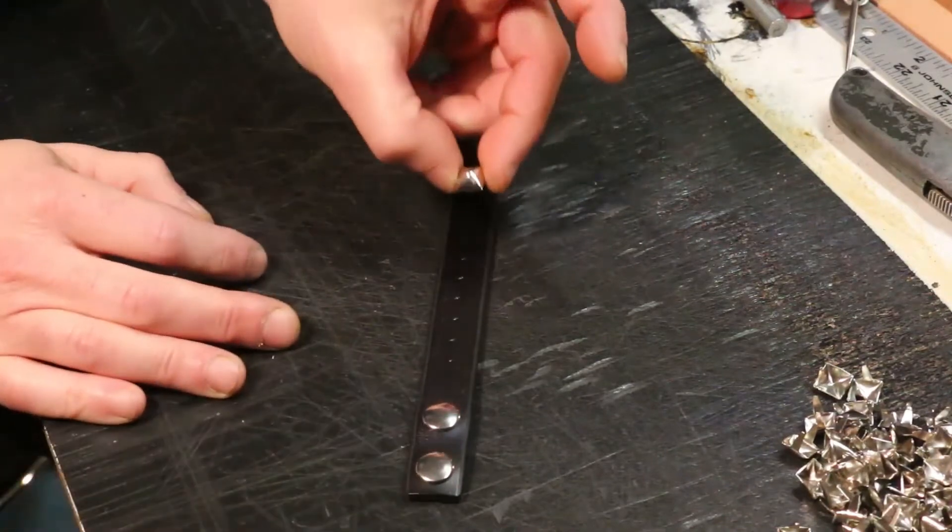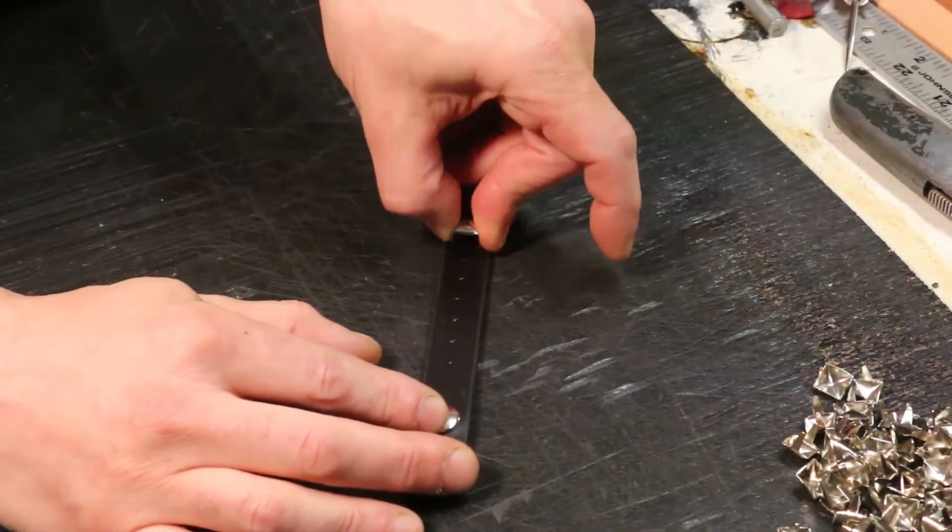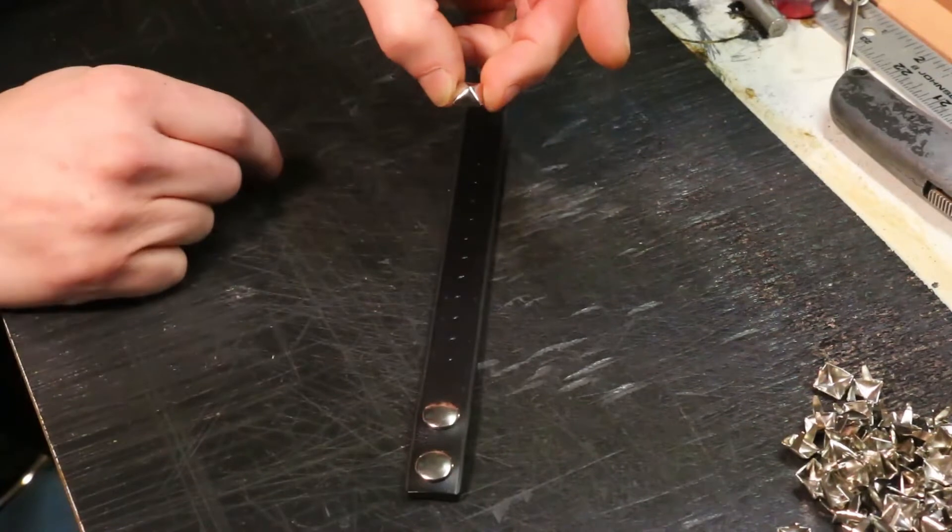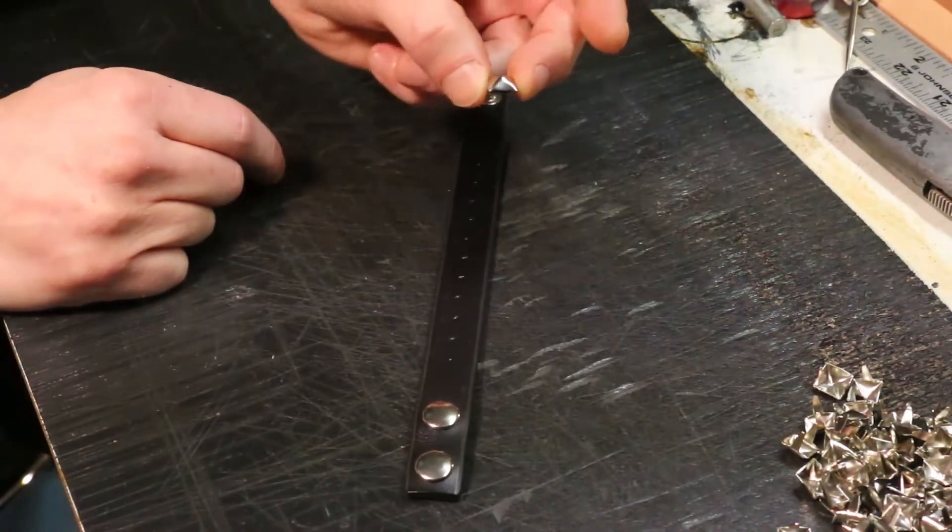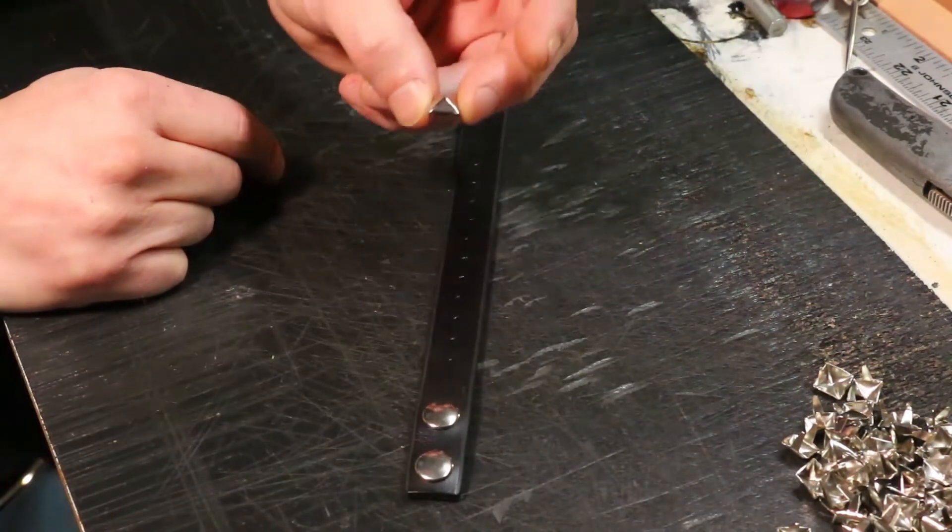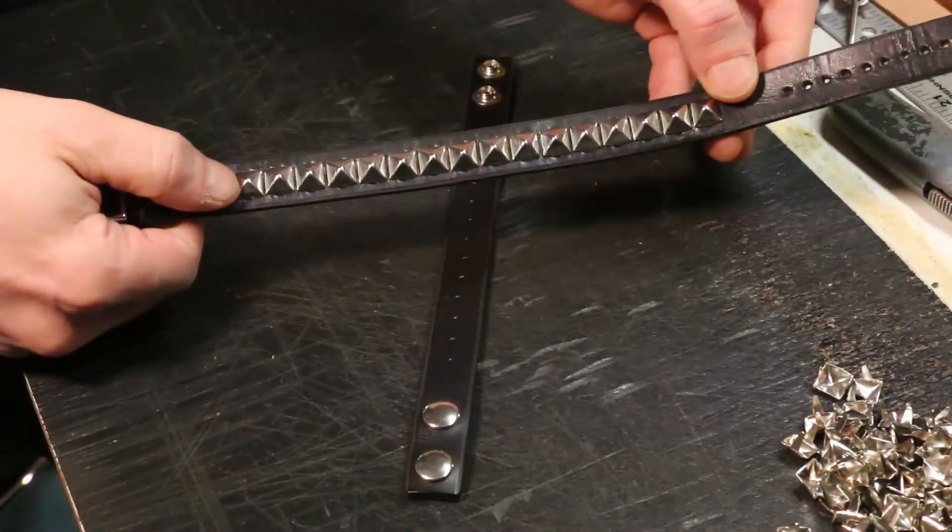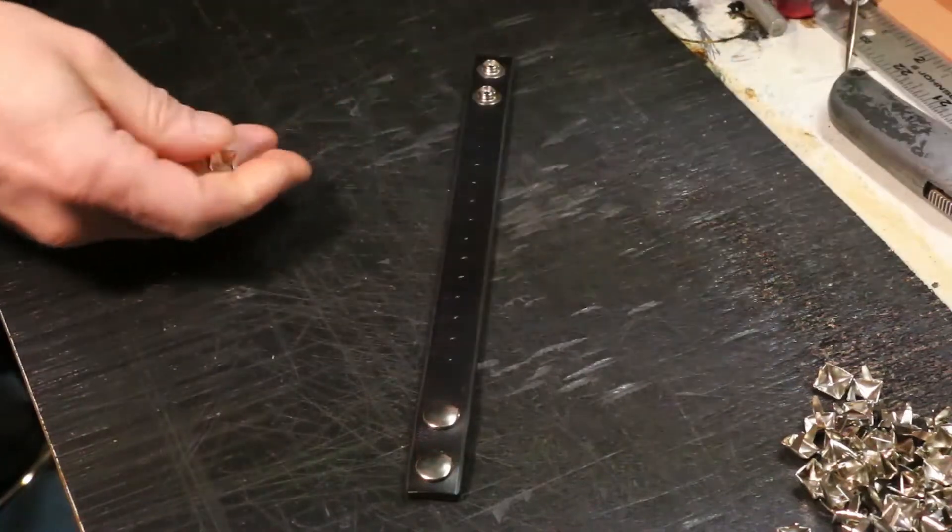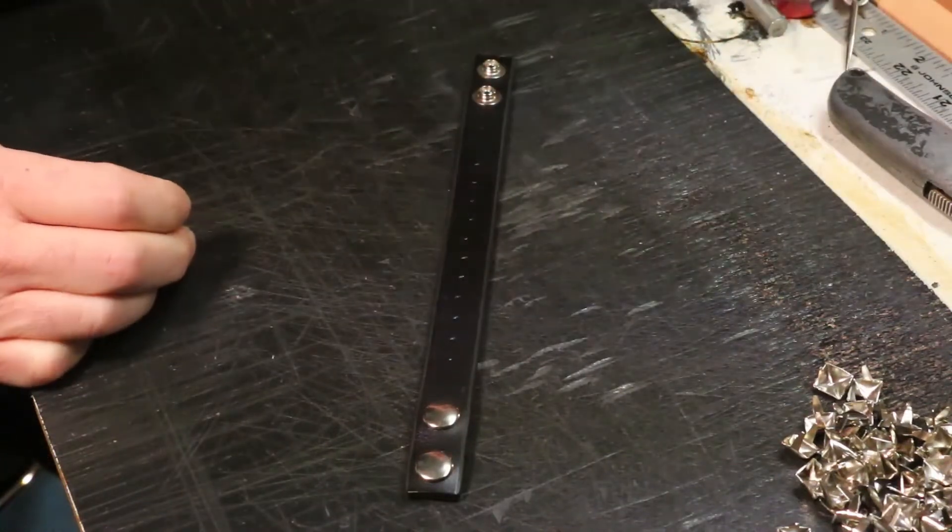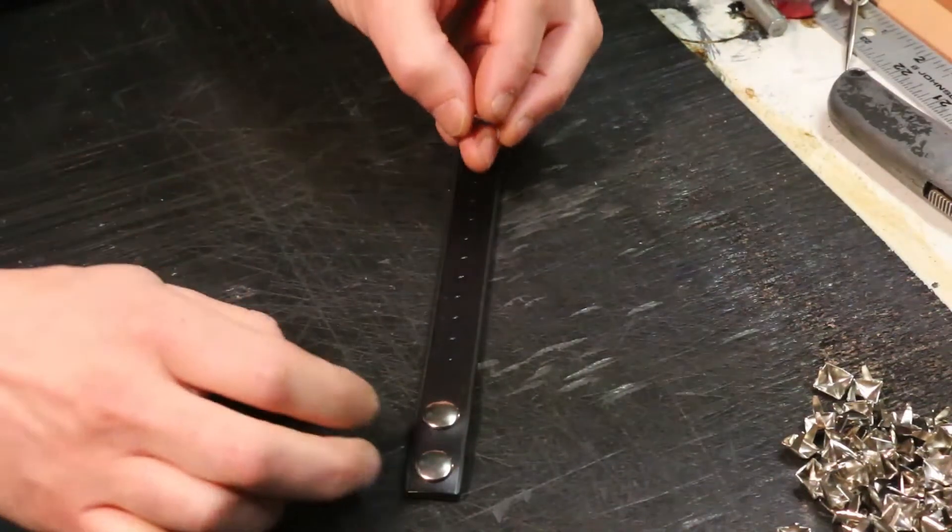Now pyramid studs are the most difficult to set and that's because of the square base. Any misalignment, any slight deviation from one to another and having that nice tight row can look sort of sloppy if you don't have a good technique to get those prongs fitted properly.